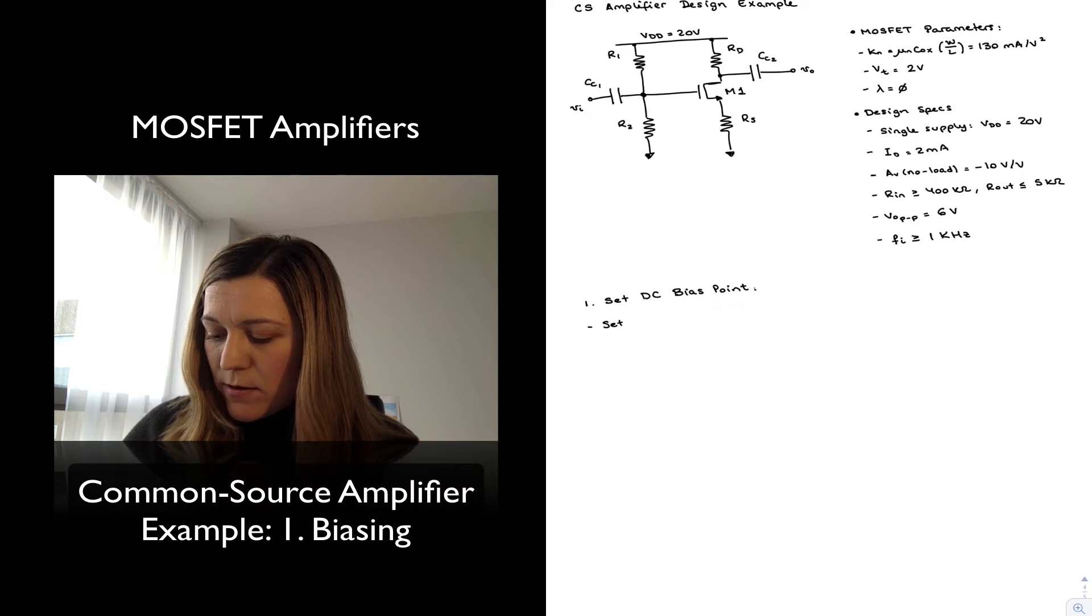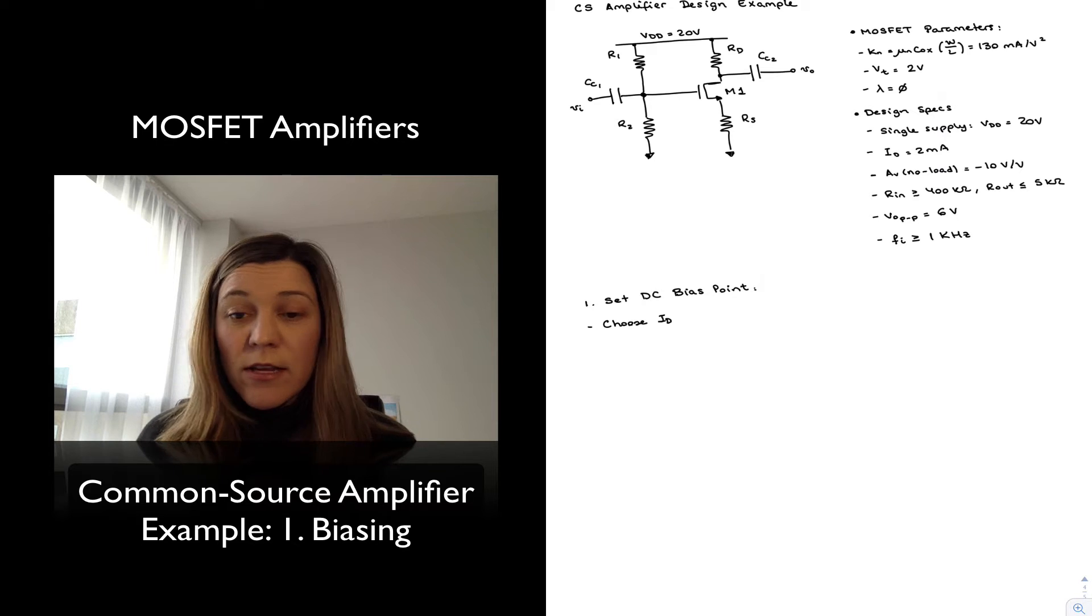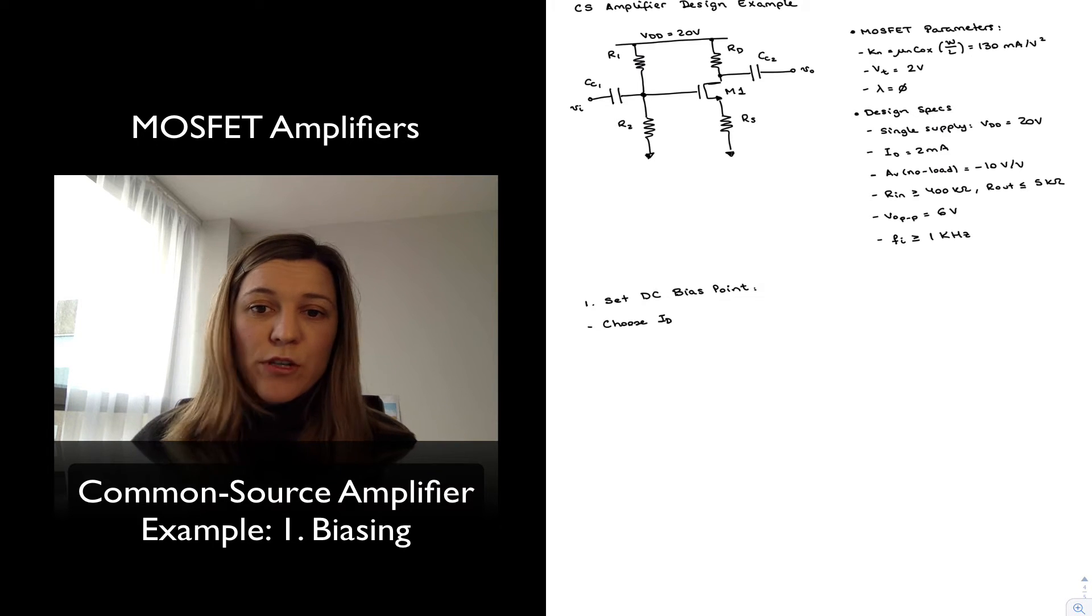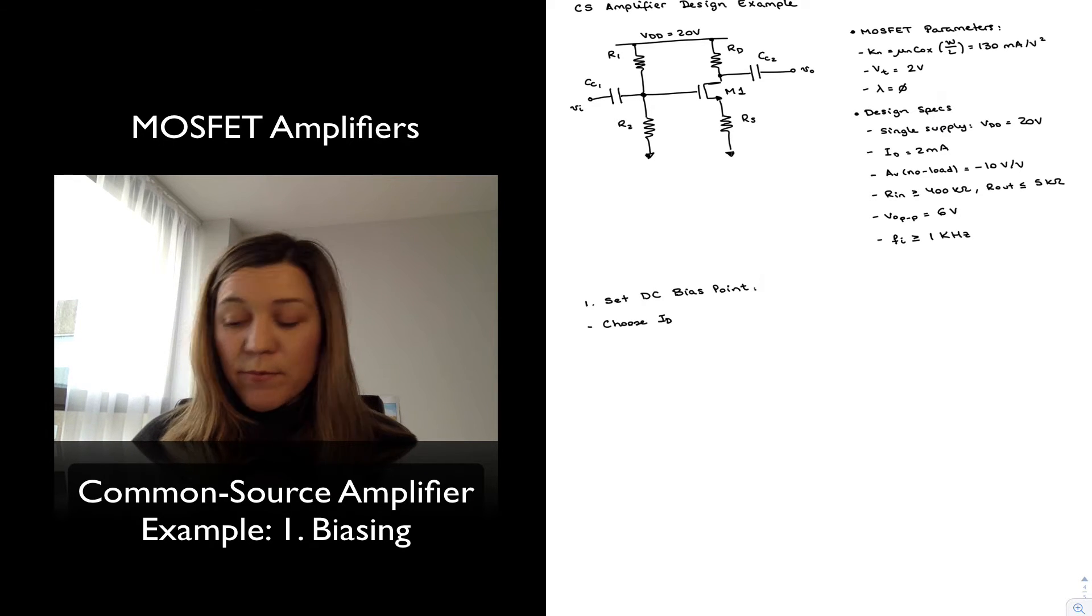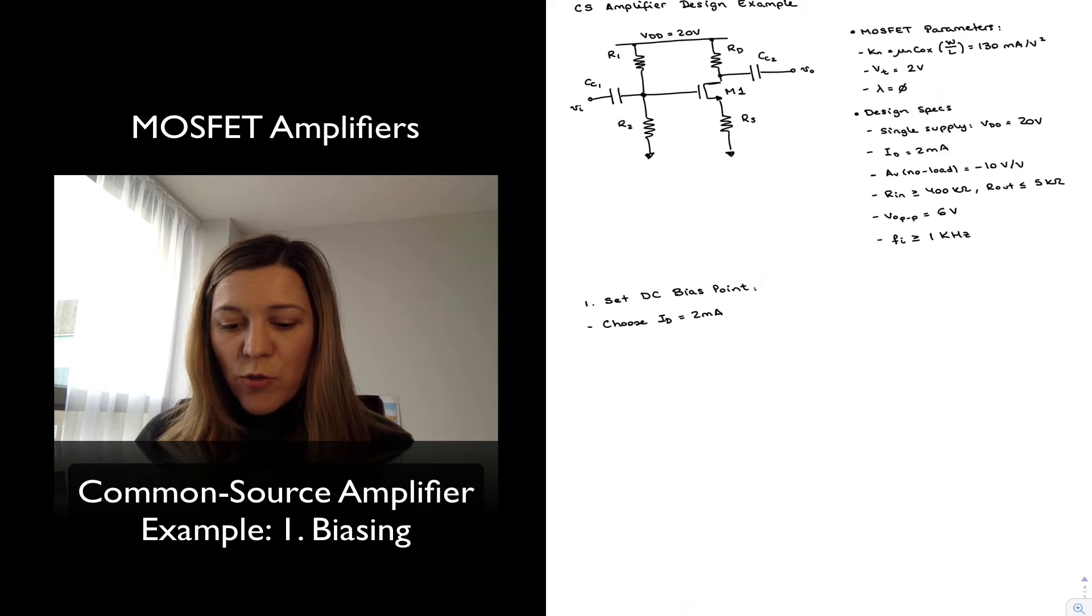First thing I'm going to choose—I'm going to select a value for my drain current. In this case, I am given a value for it, 2 milliamps, but I won't always be, so I'll have to make a selection. In this case, since I'm given 2 milliamps, that's what I'm going to go with.